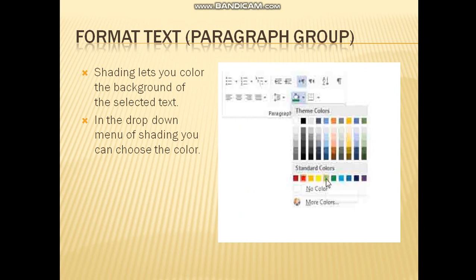Formatting text will also let you choose the shading of the background. If you click on the bucket icon in the paragraph group, it will let you control the color of the background of whatever text you have selected. In the drop-down menu you will choose the color you want, and when you click the bucket the color will be applied.